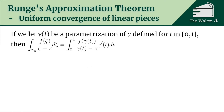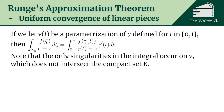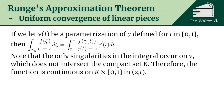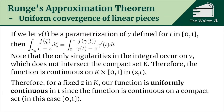Looking at each linear piece individually: if we let gamma(t) be a parameterization defined for t in [0, 1], then the integral over gamma_n of f(zeta)/(zeta minus z) d-zeta equals the integral from 0 to 1 of f(gamma(t)) divided by (gamma(t) minus z) times gamma'(t) dt. Note that the only singularities occur on gamma, which never intersects the compact set K. This means our function is continuous on K cross [0,1] in z and t, and fixing z in K, the function is uniformly continuous in t since [0,1] is compact.